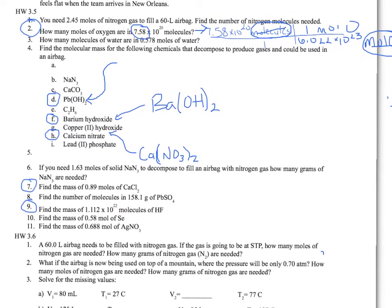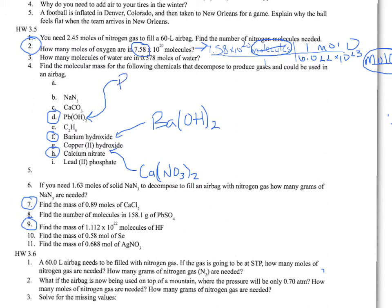Let's look at number 4. We're looking to find the molecular mass for the following chemicals. For you it's C, on mine it's D. We have Pb(OH)₂ — lead(II) hydroxide. It'll be fairly important for us to count the number of each element that is in our molecule.